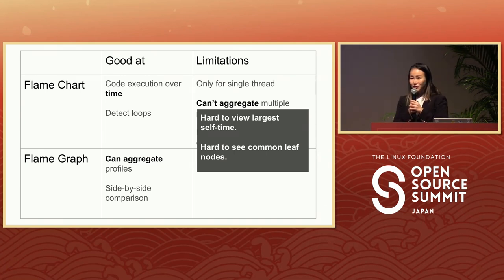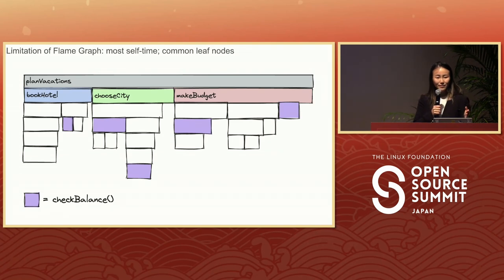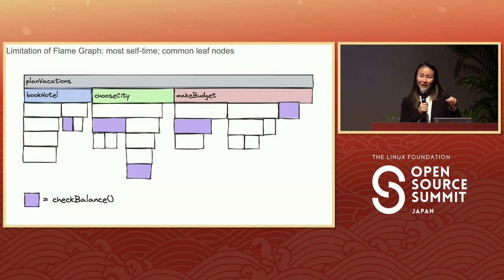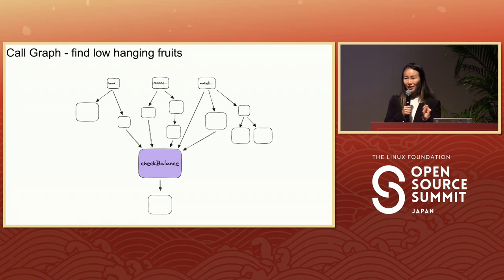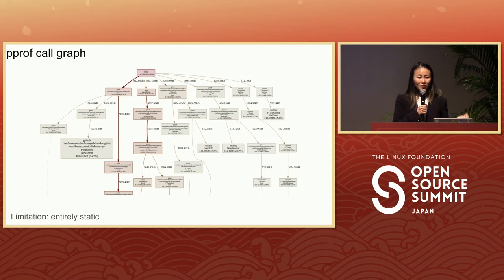Both the flame chart and flame graph share similar limitations in that they're hard to use for finding functions with the most self-time, and with that, it's hard to see the common leaf node. Imagine you have a function called 'check balance' that is spread throughout your frames — a flame graph and a flame chart will not easily reveal that this is the function with the most self-time. So if you want to make your application run faster, that's likely the biggest low-hanging fruit. What can help you find low-hanging fruit more easily is a call graph. A call graph will have many different code paths pointing to it, and the size of the node reflects the self-time of the function. One example of a call graph out there is the pprof tool, which integrates with Graphviz to generate the call graph.